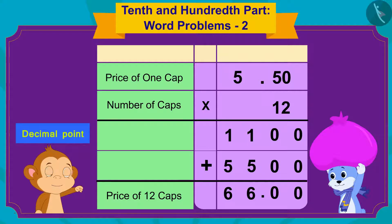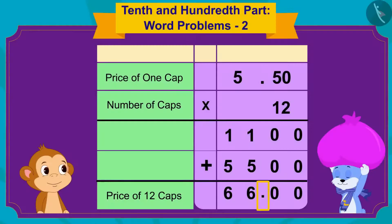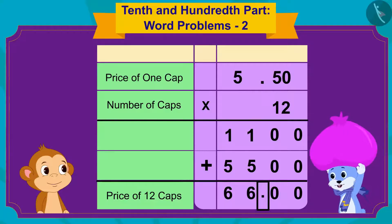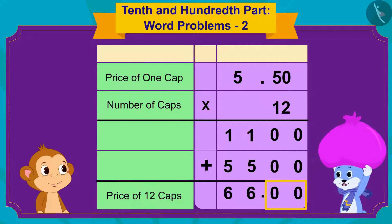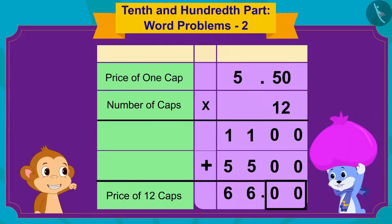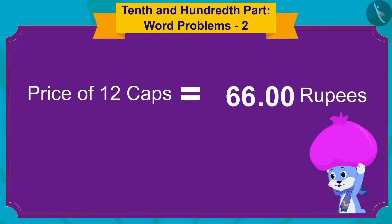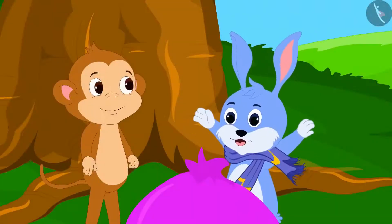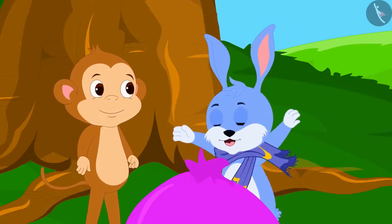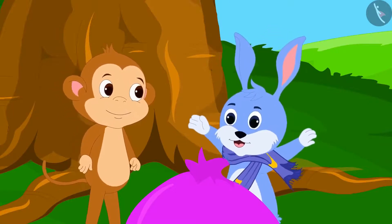And then we will get our answer. Now I get it. If I put the decimal point here, there will be only two digits or two zeros after the decimal point. I will earn 66 rupees by selling 12 caps. On saying this, Bunny started dancing happily.